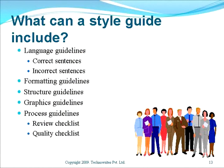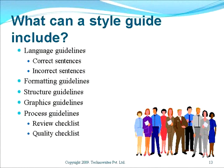What can a style guide include? A style guide can include language guidelines — correct sentences, incorrect sentences, use of numbers, use of punctuation marks, hyphens and so on. Formatting guidelines — for different heading levels in a document. Structure guidelines — what chapter should come first, what chapter should come second, whether a document needs an index. Graphic guidelines — how graphics should be taken, how they should be placed, whether to use callouts, how they should be aligned, whether a graphic needs a caption, how a company logo should be used and what color. Process guidelines — things like a review checklist or a quality checklist that must be checked before releasing a document.